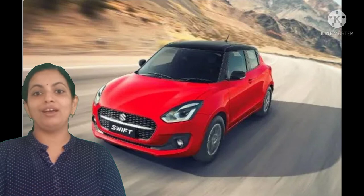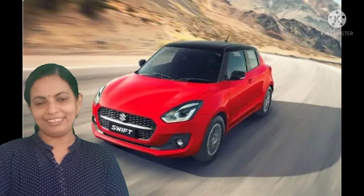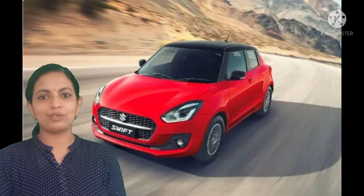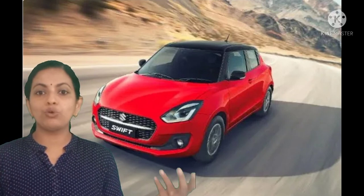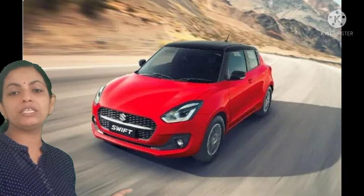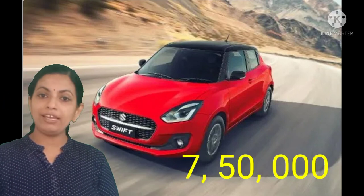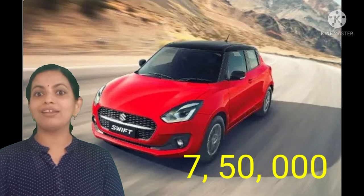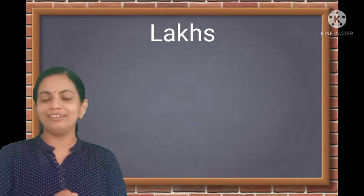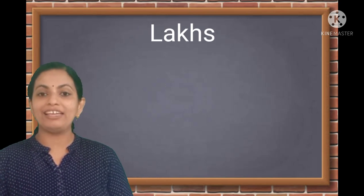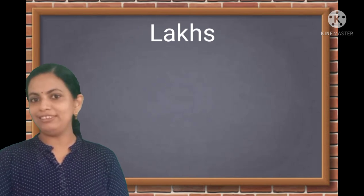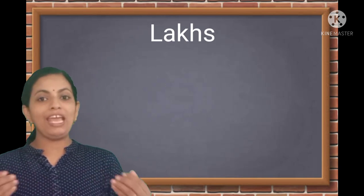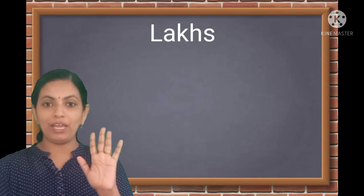Of course, after making a house, we need to buy a car. So we can buy a Maruti Swift — it's a common car, not so costly. This Maruti Swift costs 7 lakh 50 thousand. Did you see all these prices? All are in lakhs, but we didn't learn how to read and write lakhs. So, can we learn how to deal with lakhs? We have already learned about 5-digit numbers.